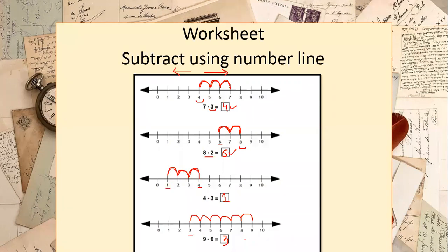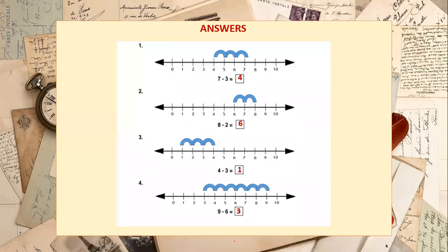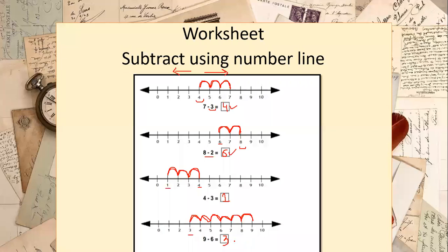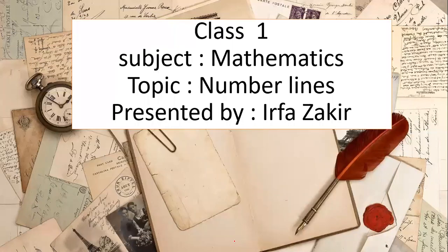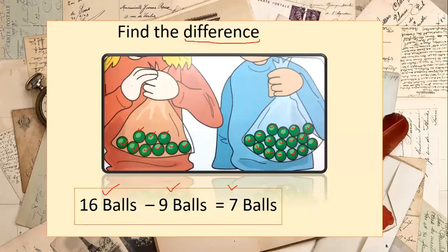For 9 minus 6: start from 9 and move backward 6 steps — 1, 2, 3, 4, 5, 6 — and we land on number 3. So 9 minus 6 equals 3. This is how you solve questions using number lines. Answers have been provided as well.